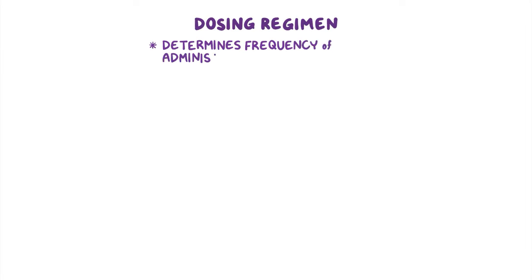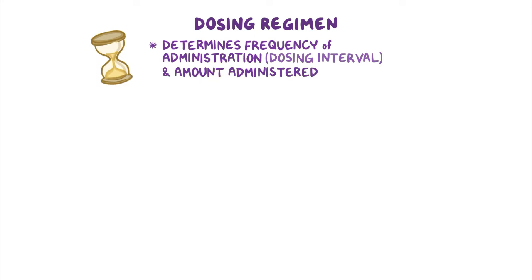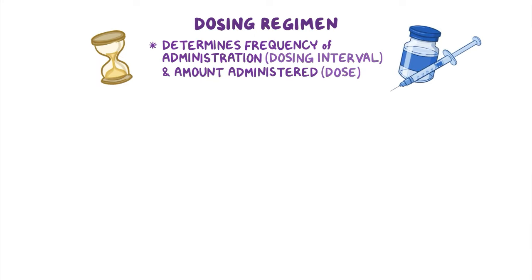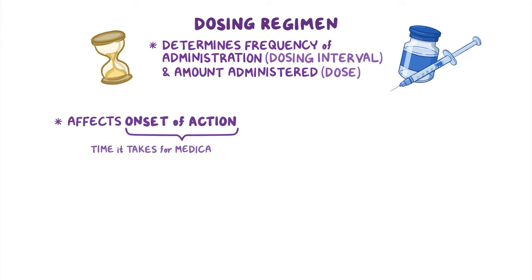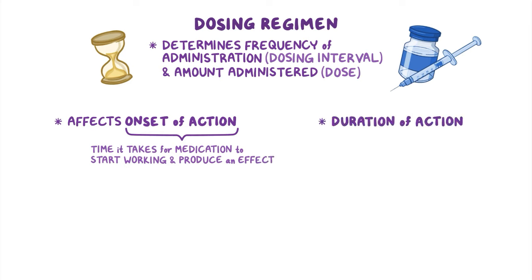Each medication is given at a specific schedule or dosing regimen, which determines the frequency of administration, or dosing interval, and the amount administered, known as the dose. The regimen is important since it affects the onset of action — the time it takes for a medication to start working — as well as the duration of action, which is the total length of time during which a medication produces an effect.